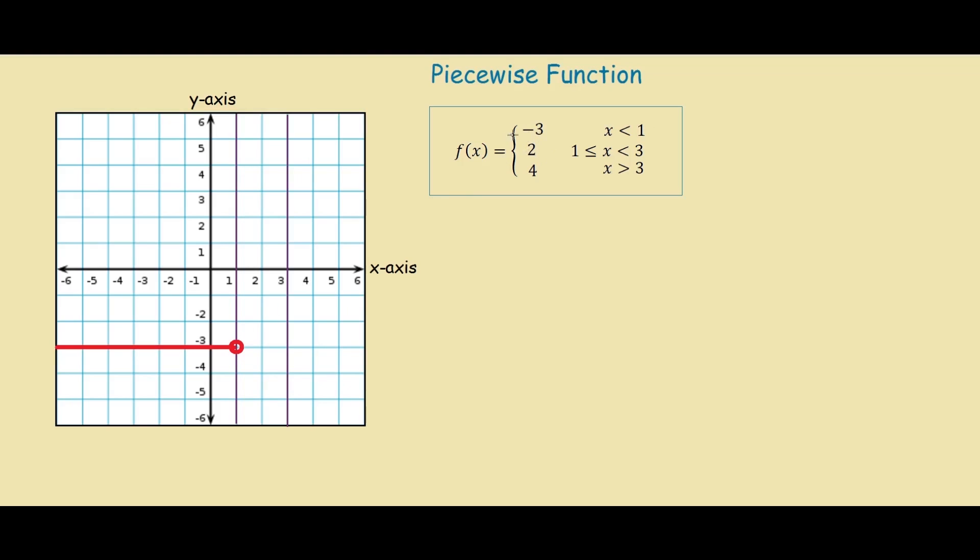For our next function, we have y equals 2. So we have the line y equals 2, and it's defined in the region 1 to 3. Again, if we look at our restraint, if we look at 3, it's not defined there. So it's an open circle.